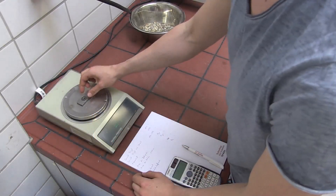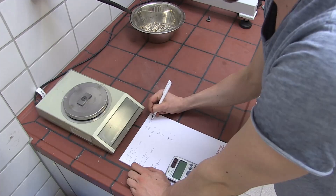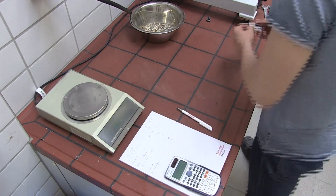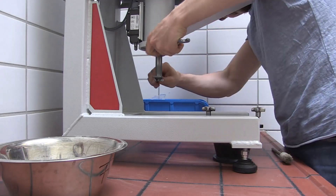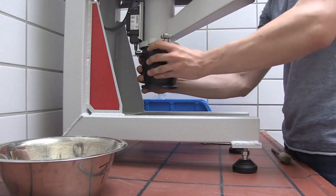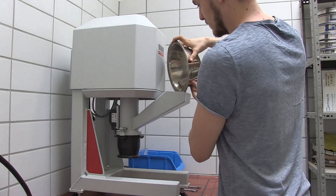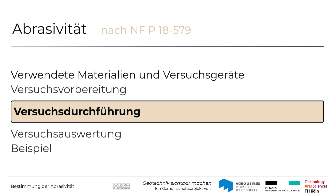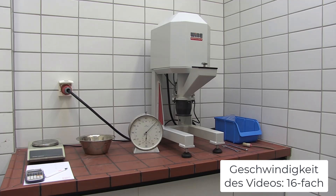Der Stahlflügel definierter Größe und Stahlgüte wird zunächst mit einer Messgenauigkeit von 0,01 % eingewogen. Dieses Gewicht wird als Masse MP1 bezeichnet. Anschließend wird der Stahlflügel an der Antriebsachse montiert und ein Behälter genormter Größe angebracht. Danach erfolgt das Einfüllen der Bodenprobe, sodass der Stahlflügel mit Boden bedeckt ist.